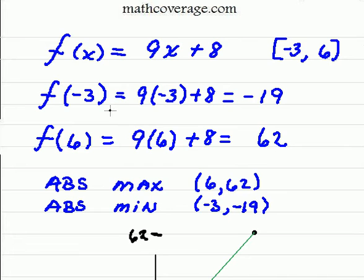And so we can see that when x is equal to -3, your y value is equal to -19. So I display that as a point and I say that the absolute minimum occurs at (-3, -19), and the absolute maximum occurs at (6, 62).